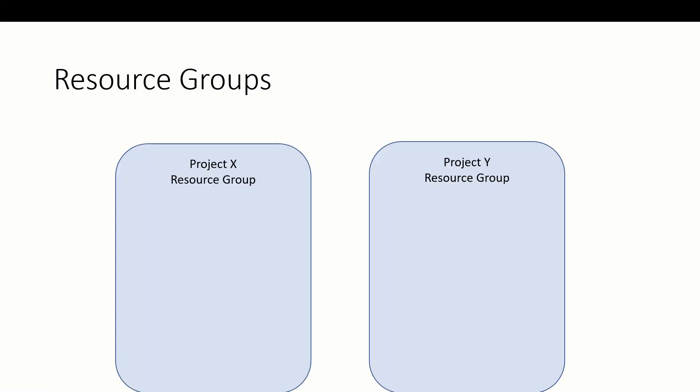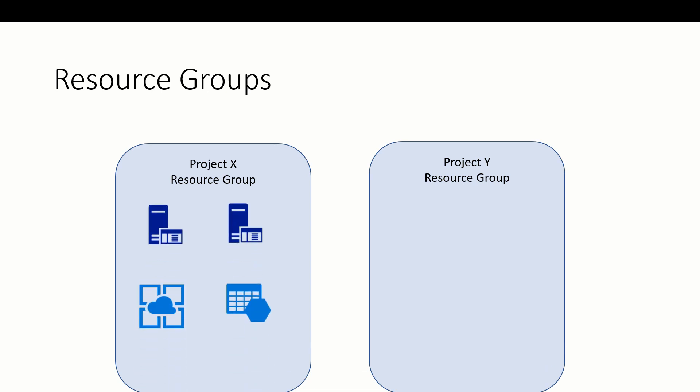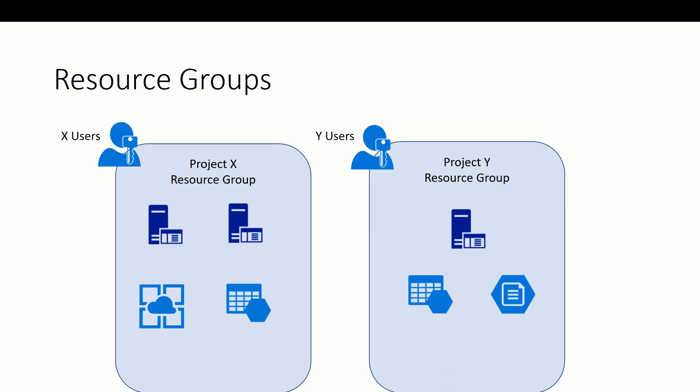Instead, you would put all app services and storage accounts related to one solution in a single resource group. Let's consider two projects, Project X and Project Y. Both require multiple Azure services to support the solution, and two different groups will be working on the project. By isolating those services in one Project X resource group and one Project Y resource group, role-based access control can be applied at the group level, only allowing access to those who need it. If cost recovery is used, billing can be calculated based on the resource group.